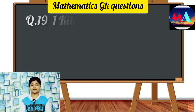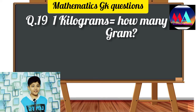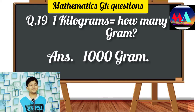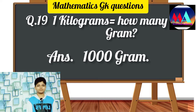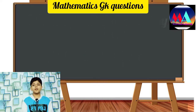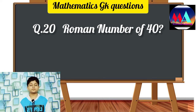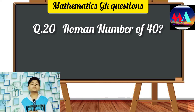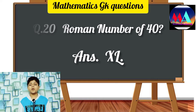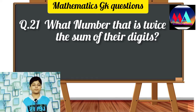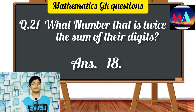Question number 19: One kilogram is equal to how many grams? Answer: 1000 grams. Question number 20: What is the Roman numeral for 40? Answer: XL. Question number 21: What number is twice the sum of its digits? Answer: 18.